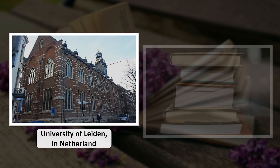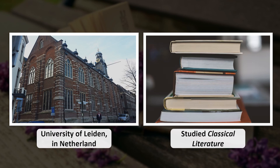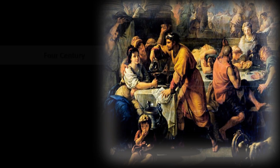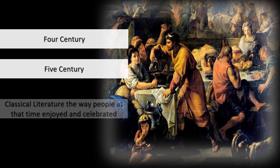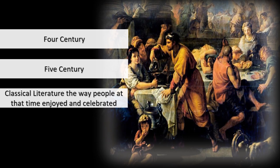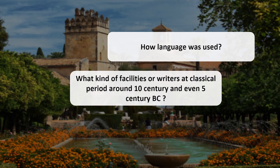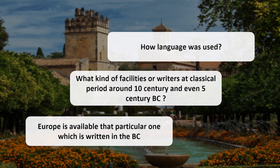At the University of Leiden in the Netherlands, he studied classical literature, which widens your horizon of understanding. Classical literature has stood the test of time for centuries, even a millennium. Through it you know how people enjoyed and celebrated, how language was used, and what facilities writers had in the classical period — around the 5th century BC. Our writer was well versed in classical learning and literature, which helped him appeal to both the scholar and the ordinary reader.